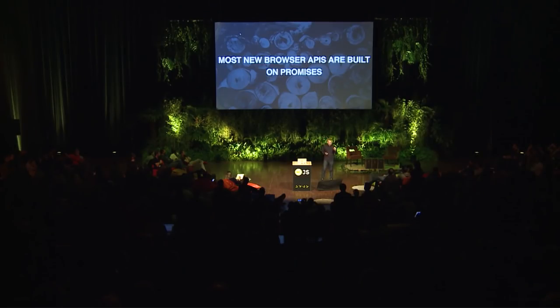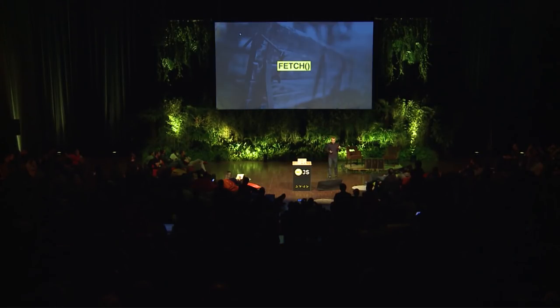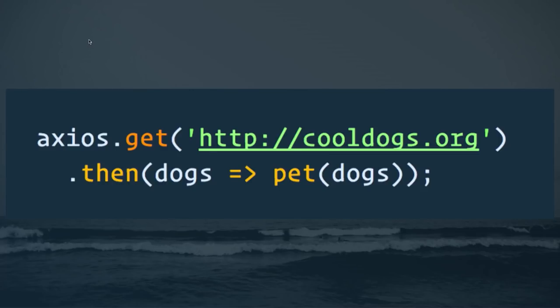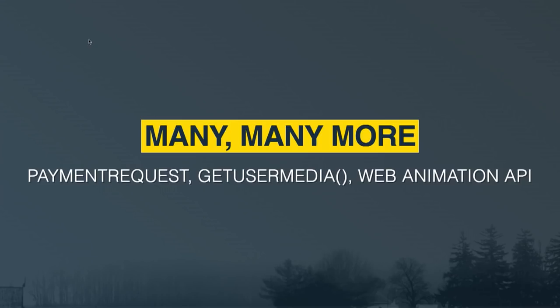A lot of the new browser APIs are being built on promises. We've got fetch, where you fetch your data, convert it to JSON, and then deal with that data. There's also Axios, which is like fetch but with good built-in defaults so you don't need that second chained then. Many more browser APIs — Payment Request, getUserMedia, Web Animations API — are all being built on standard promises.